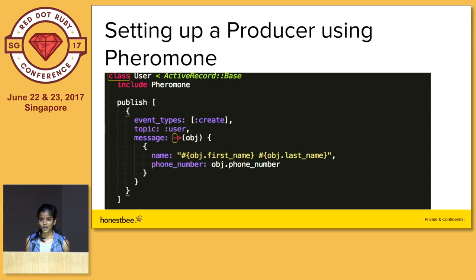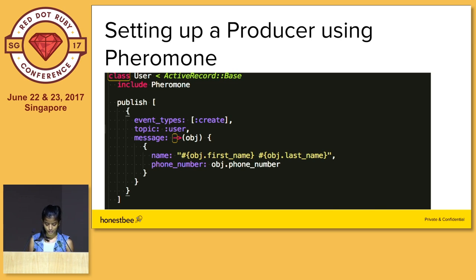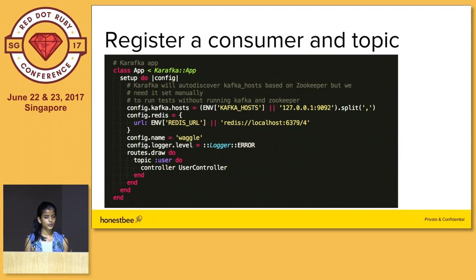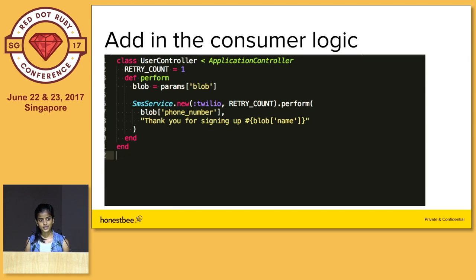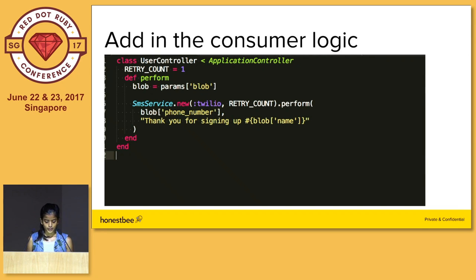As you're publishing messages, at some point you want to pick them up and process them. That's where Karafka comes in — a library that makes it really easy to set up a clean structure across your application. You create a central configuration and register a controller to a topic, creating multi-topic consumer applications. Once you define this mapping, you define your controller code — it's advisable to keep it lean. In this case, I've created a separate service to send out an SMS, picking up the phone number and name of the user from the message sent to the message bus.